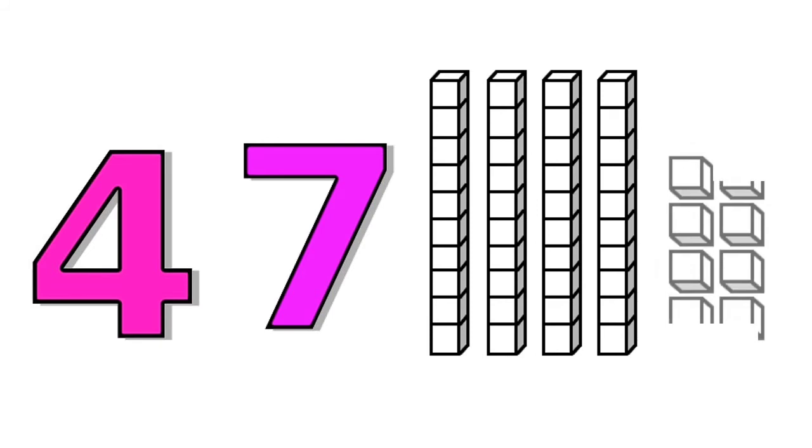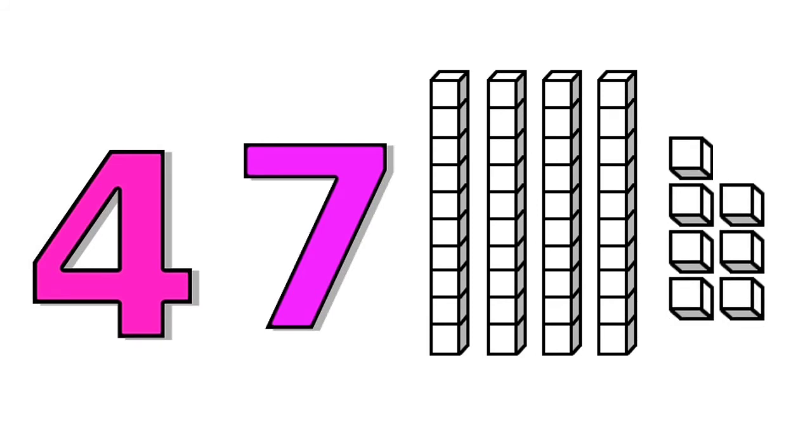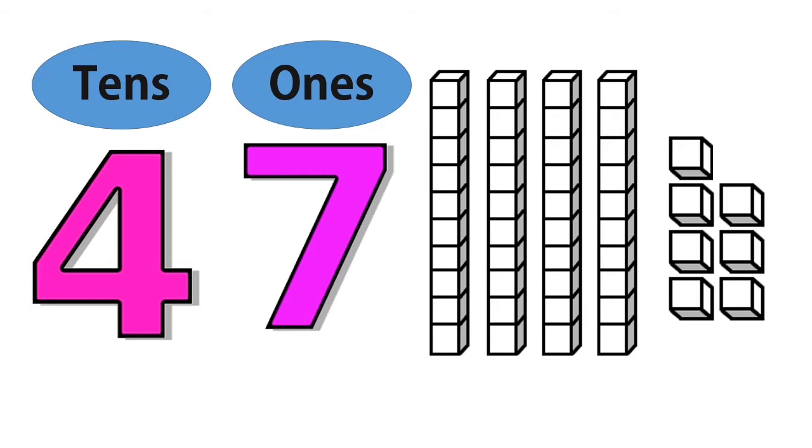Let us now look at this number. This number is made up of two digits: digit four and digit seven. Seven is represented by the seven cubes and the four is represented by the four lines. Each line has ten cubes. The number seven is ones and the number four is tens.